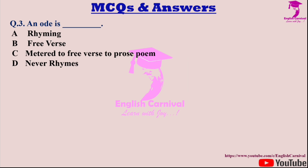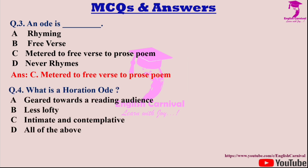Question three: An ode is — dash. Options are A: Rhyming; B: Free verse; C: Meter to free verse to prose poem; and D: Never rhymes. Correct answer is C — meter to free verse to prose poem.